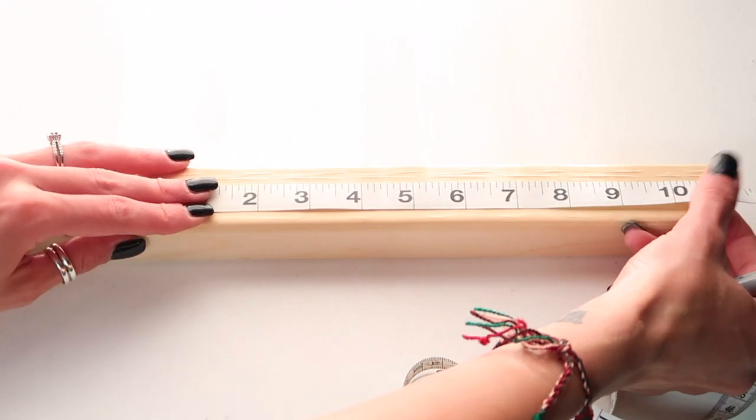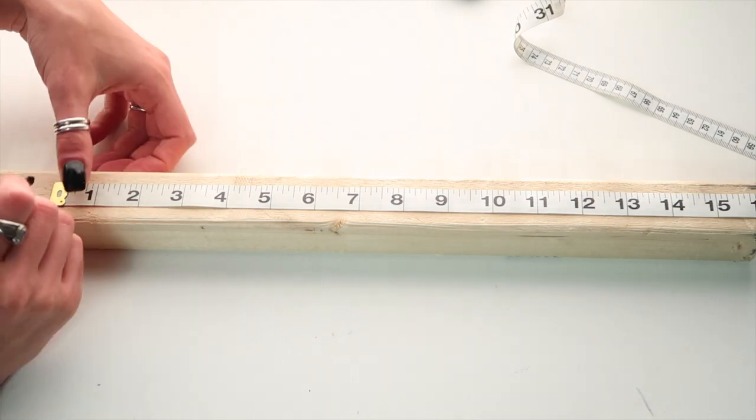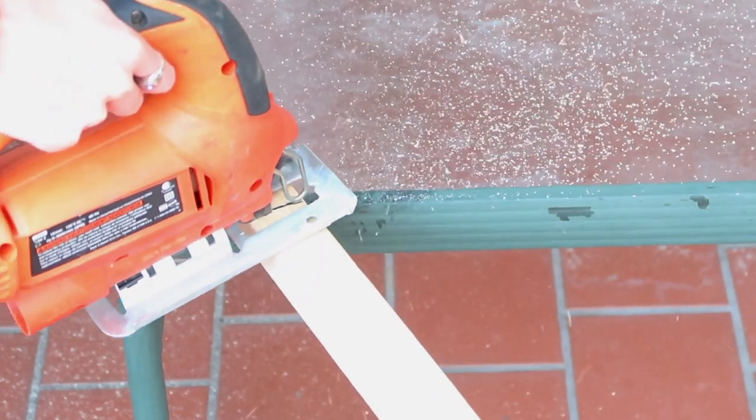So the first thing we're going to do is measure out the frame. So I'm doing the top and the bottom 10 inches long and then the two sides 16 inches long. And now I'm going to cut the wood.